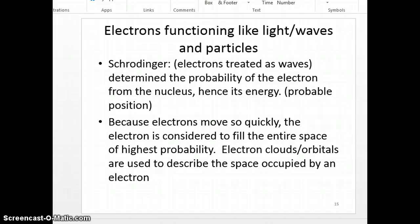So then there's Schrödinger. Electrons were treated as waves. Determine the probability of the electron from the nucleus. So he was trying to determine where's the best place for this electron to be at this point in time. Hence its energy. So how far away from the nucleus it is, meaning, how much energy does it have? And we call that its probable position. Because again, we can't exactly know exactly where it's at and its momentum at the same time. But we can have an idea of where it's floating around. So we have a probable position for these electrons.